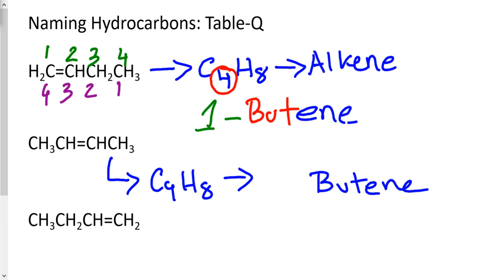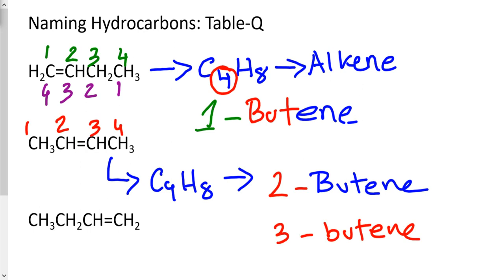For the second question, we also have 4 carbons and 8 hydrogens, so this is also an alkene and the name ends with -ene. Since I have 4 carbons, the prefix is 'but' and the name is butene. However, the double bond is somewhere in the middle — not between the first and second carbon — so it cannot be 1-butene. Counting from left to right, the double bond is between the second and third carbon, so the name should be 2-butene. Always pick the lowest number, so the name is 2-butene.